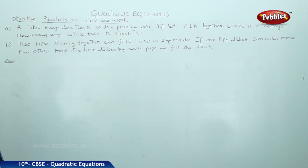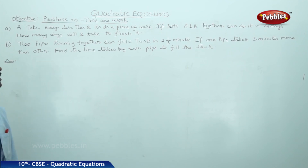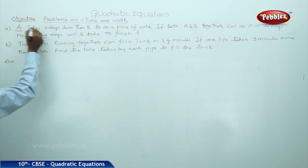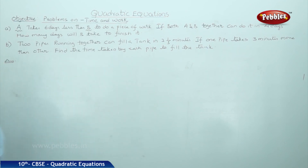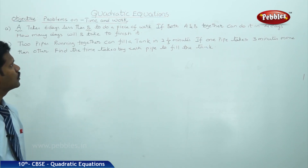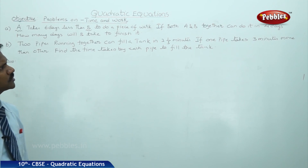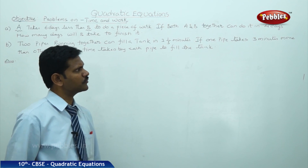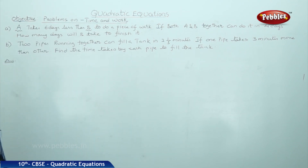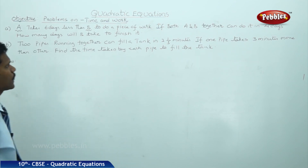Here the first question is given. There are two persons, A and B. A takes 6 days less than B to do a piece of work. If both A and B together can do it in 4 days, how many days will B take to finish it?